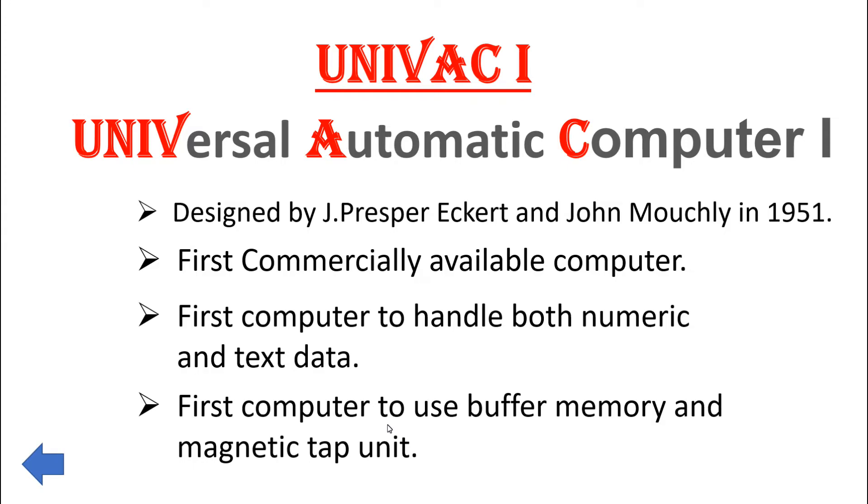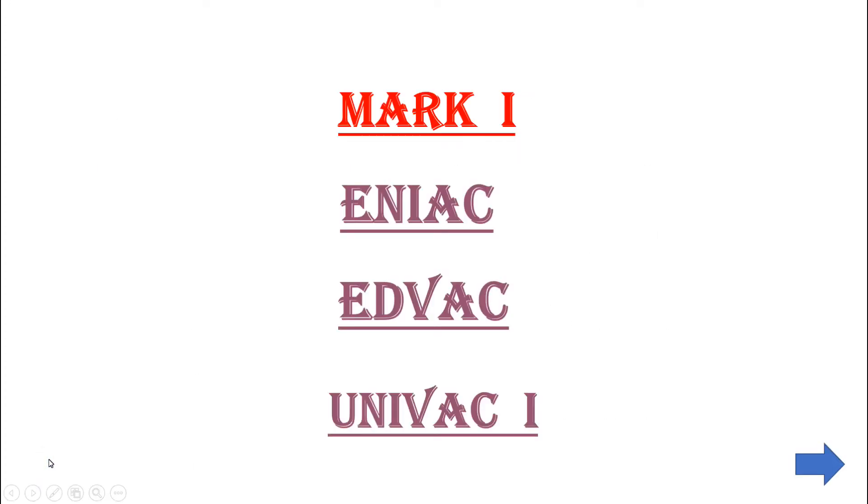J. Presper Eckert and John Mauchly in 1951. It was the first commercially available computer, first computer to handle both numeric and text data, and the first computer to use buffer memory and magnetic tape unit. These are the three computer devices we have learned: ENIAC, EDVAC, and UNIVAC 1.